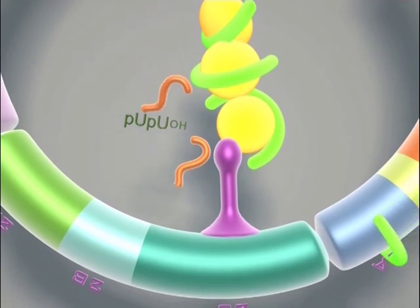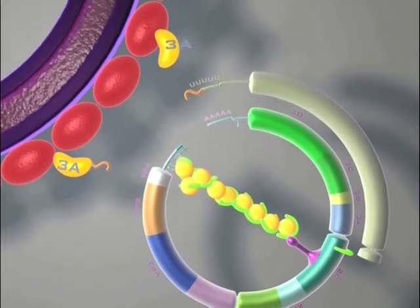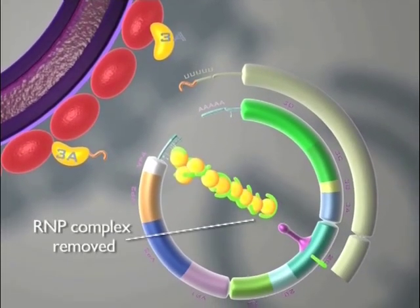The ongoing VPG uridylylation is thought to be terminated by the elongating polymerase reaching the CRE element and causing once again the breaking of the RNP complex.